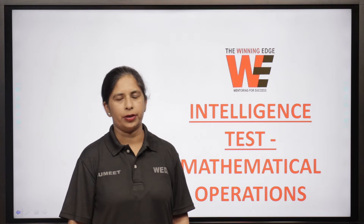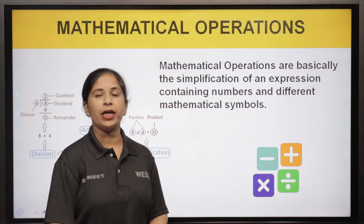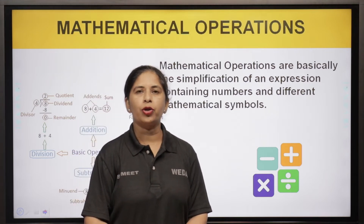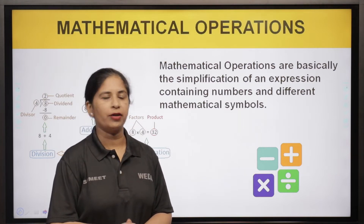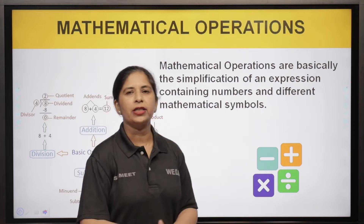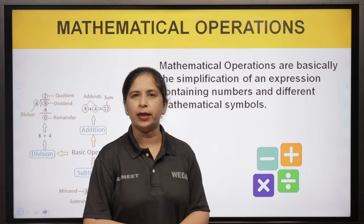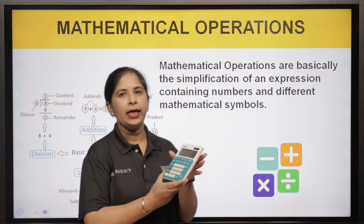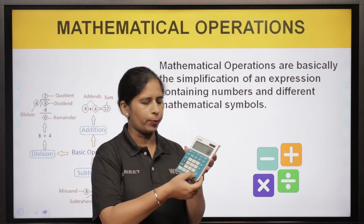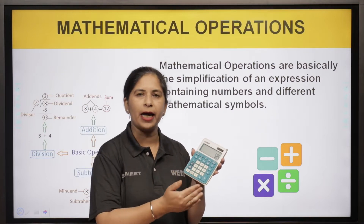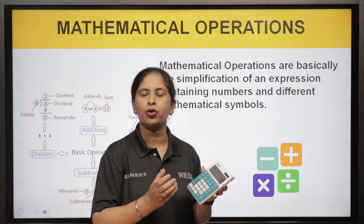Students, sabse pehle samajhte hain ki mathematical operations kya hote hain. Mathematical operations are basically the simplification of an expression. Aapko koi bhi mathematical expression diya jata hai and you have to try to simplify that expression. Har mathematical operation mein you are given different symbols — plus, minus, multiply, divide — yeh aapke operators hain, jin ke basis pe aap mathematical operation ko solve karte hain. Just like when you are using a basic calculator, aapke numbers hoti hain — yeh aapki values hain — aur aap plus, minus, multiply, divide functions perform karte ho, aur in numbers ki upar jab aap koi action perform karte ho, usi se aap apne expression ko solve karte ho.